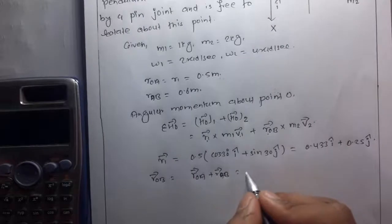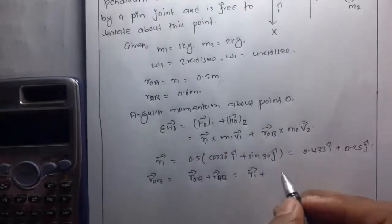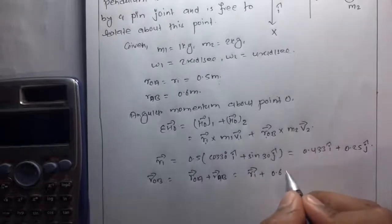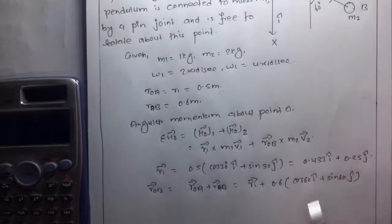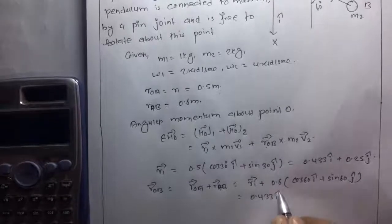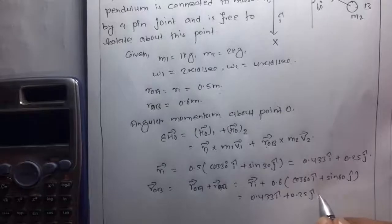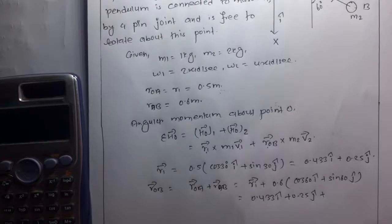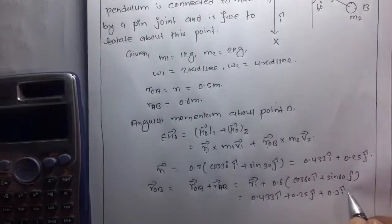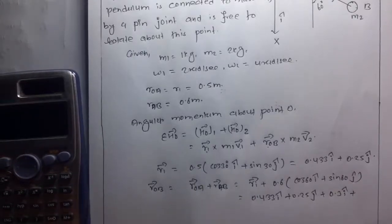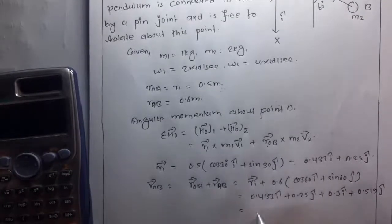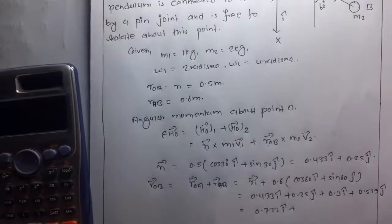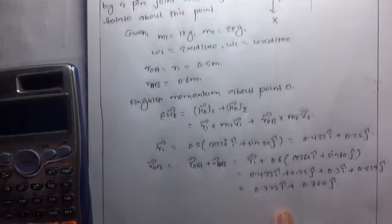r_OB = r_OA + r_AB. r_OA = 0.433 i + 0.25 j. r_AB = 0.6 cos60° i + 0.6 sin60° j = 0.3 i + 0.519 j. Therefore r_OB = (0.433 + 0.3) i + (0.25 + 0.519) j = 0.733 i + 0.769 j.